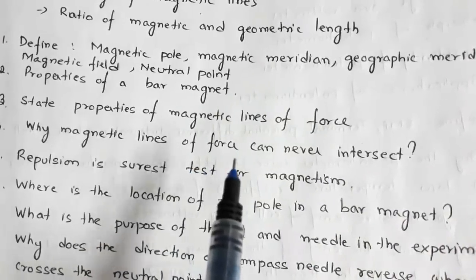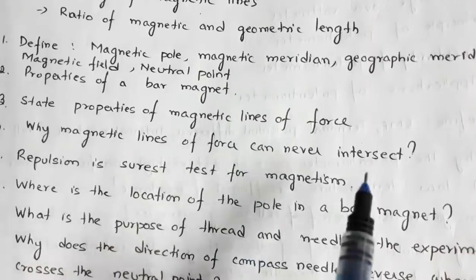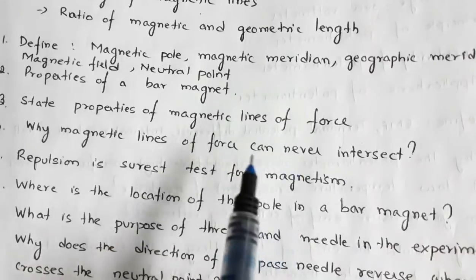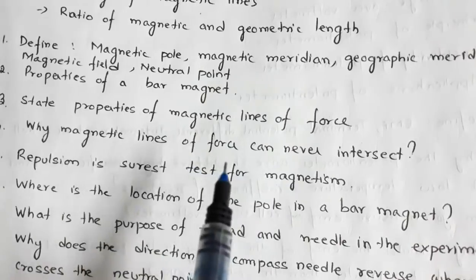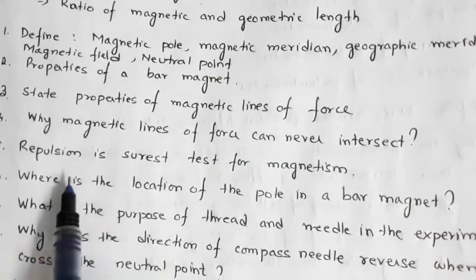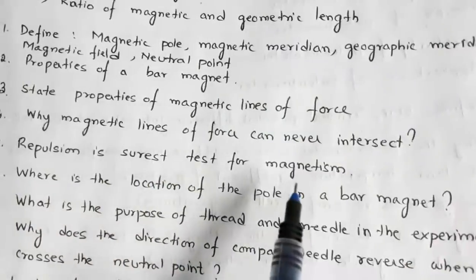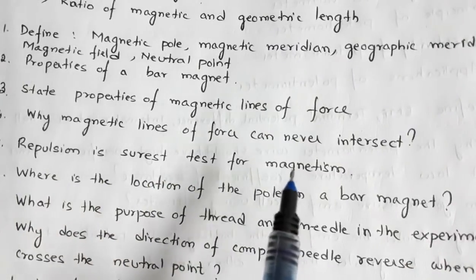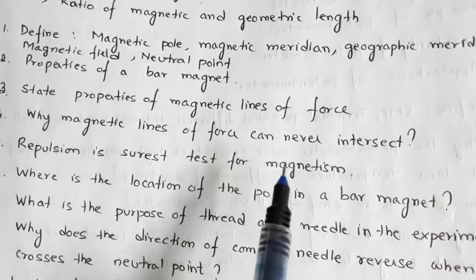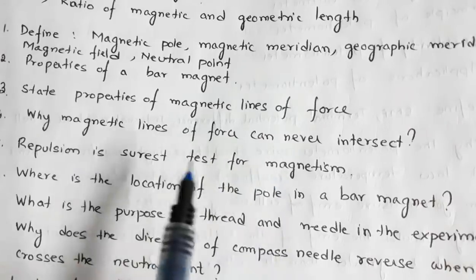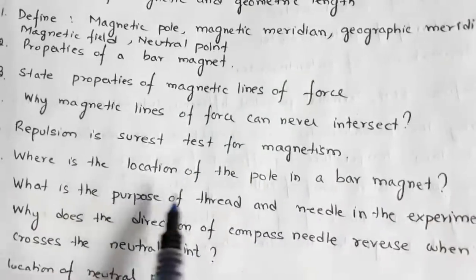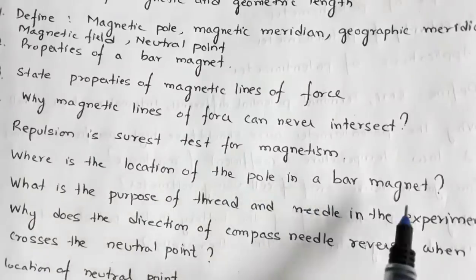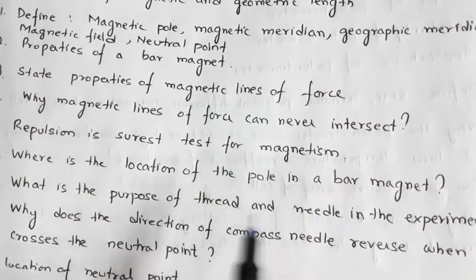Magnetic lines of force never intersect because the tangent to a magnetic line of force gives the direction of the magnetic field. If they intersect, at the point of intersection you would have more than one tangent, which would imply more than one direction of the magnetic field. Repulsion is the surest test for magnetism because a magnet will attract any magnetic material, but a magnet will repel only another magnet — not a mere magnetic material.